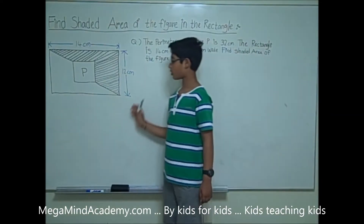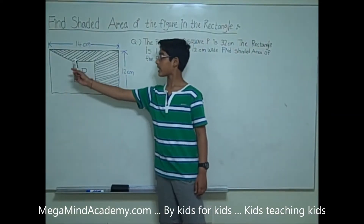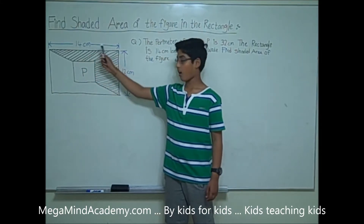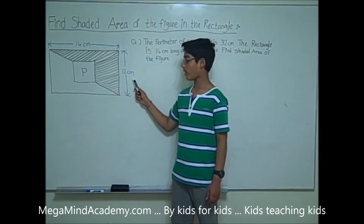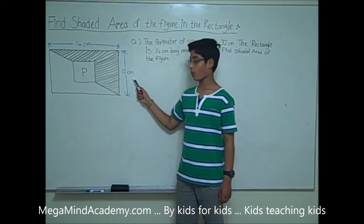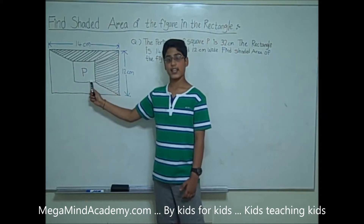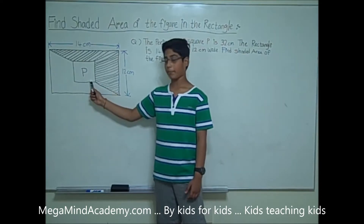This is the rectangle that is 14 cm long and 12 cm wide, and this is square P.